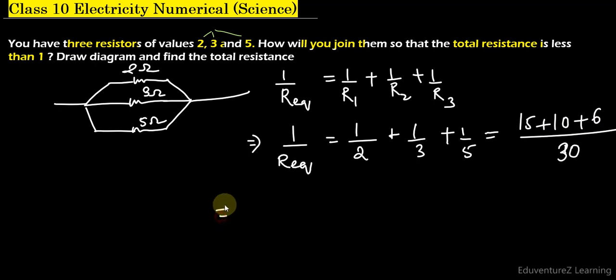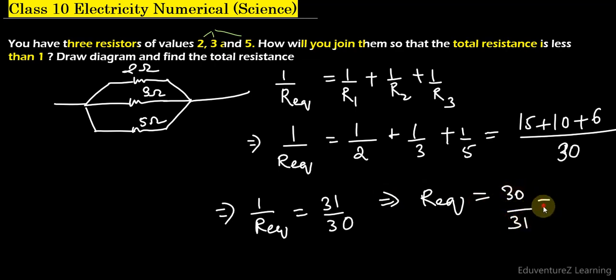So 1 upon R_equivalent becomes equal to 31 upon 30, and R_equivalent is the reciprocal of this, so 30 upon 31, which is a value less than 1. 30 divided by 31 is approximately 0.97 ohm.